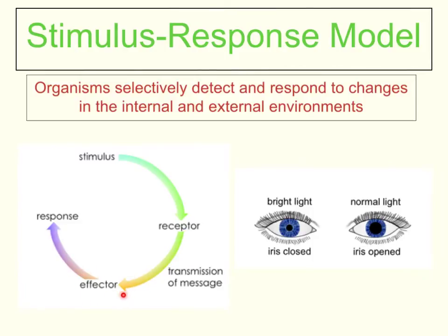The nerve message is sent, and then we reach a point where we have something called an effector. The effector is the part of the body that's going to bring about the response. The response is that the iris was opened and now it is closed — closing the iris to make the pupil become smaller. The effector is what actually brought about that response. In this situation, it's the muscles in the eye which are controlling the size of the iris. So the effector was the muscles in the eye and the response was closing the iris.